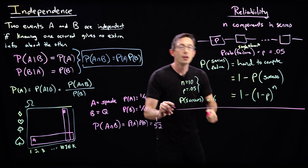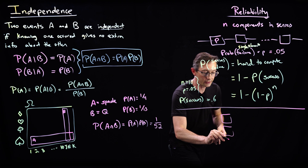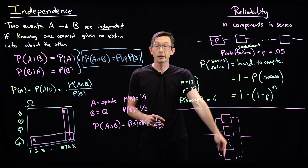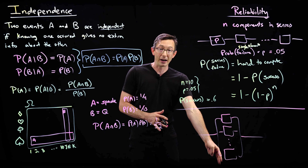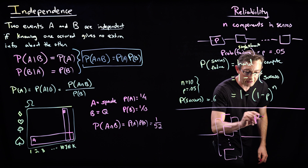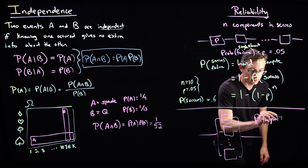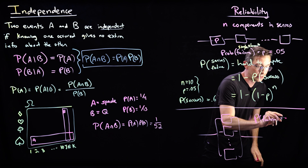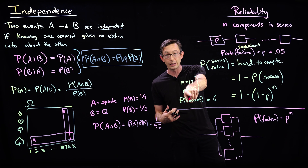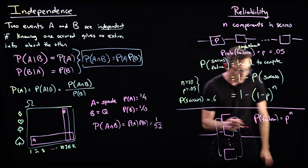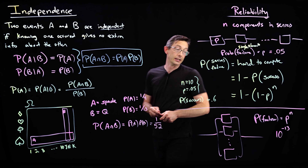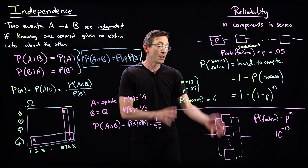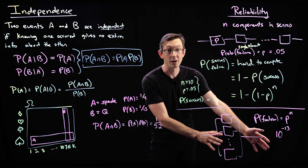Parallel does the opposite. If I stack my components in parallel, the only way for this to fail is for all of my elements to fail. If I have a single failure in parallel, I can just route around it. The probability of failure now is P to the N — way, way more unlikely than in series. With N equals 10 components in parallel, the probability of failure is about 10 to the minus 13 — astronomically low.